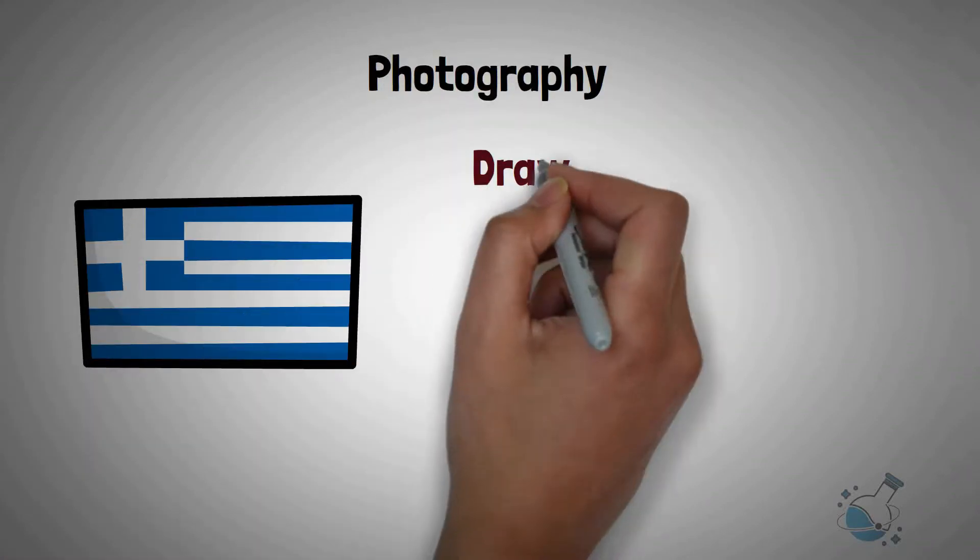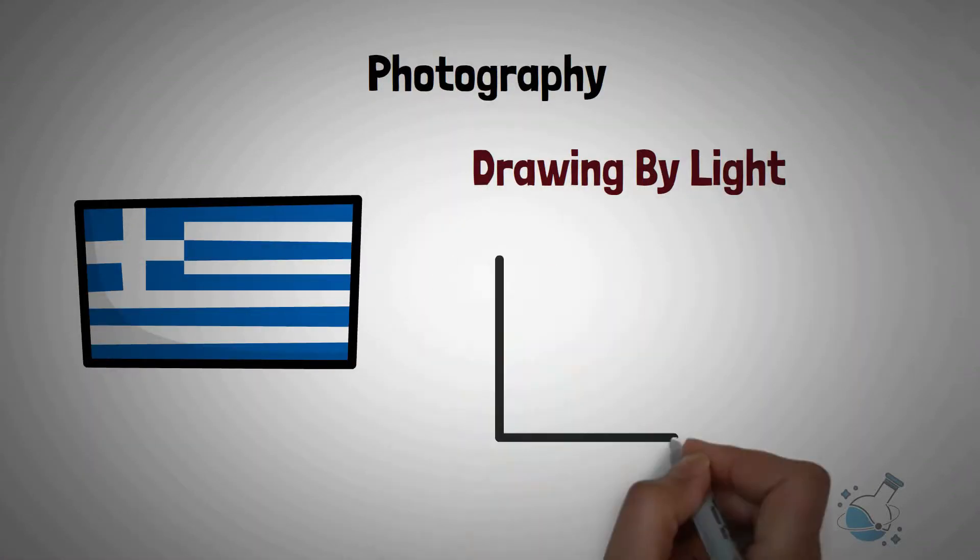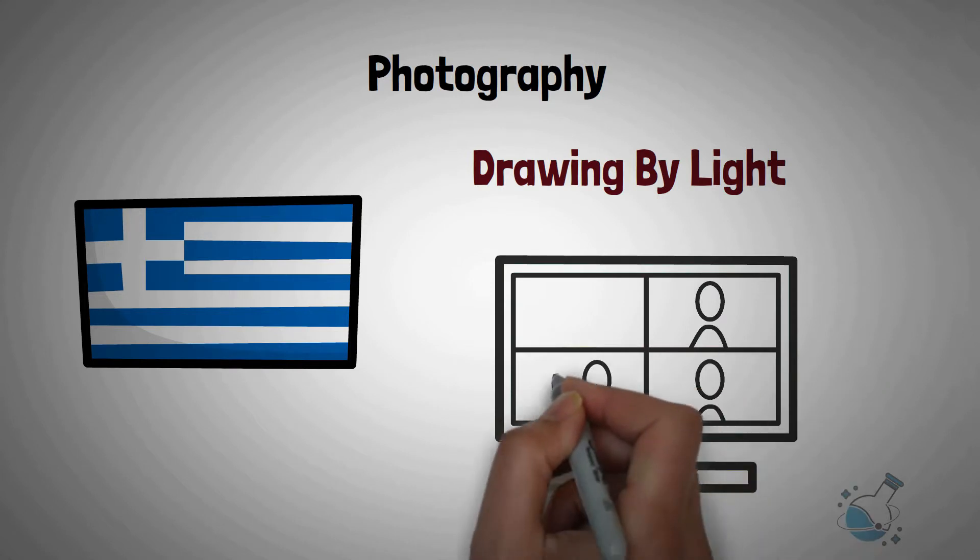The word photography comes from two Greek words which mean drawing by light. There is at present no field of human activity which is not directly or indirectly touched upon by photography.